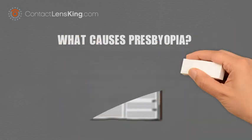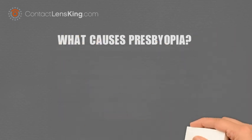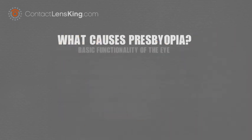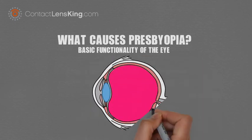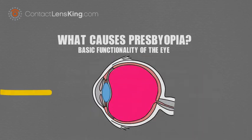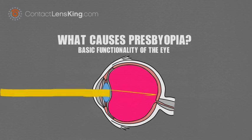To understand the causes of presbyopia, we first need to understand the basic functionality of the eye. The ability to see light properly involves the unadulterated passage through the cornea and onward through the eye's natural lens, focusing exactly onto the retina.